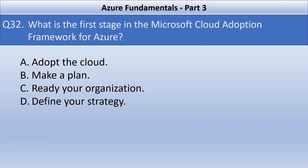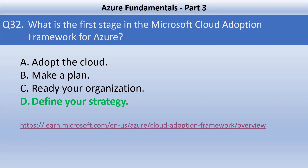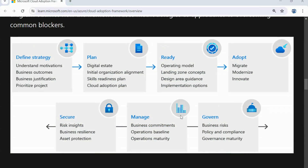Next question. What is the first stage in the Microsoft Cloud Adoption Framework for Azure? Your options are adopt the cloud, make a plan, ready your organization, or define your strategy. You must make a strategy first, where you define business justification and expected adoption outcomes. In front of you is a table listing the different stages of the Microsoft Cloud Adoption Framework. The first stage is define a strategy. In this stage, you understand your motivations, understand your business outcomes, provide business justification, and prioritize the project.